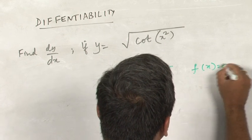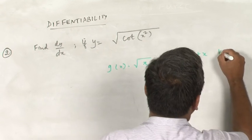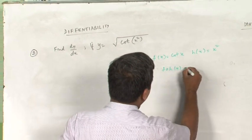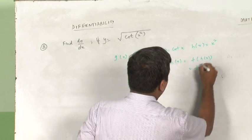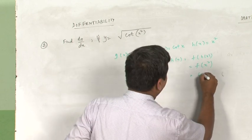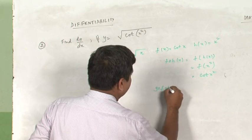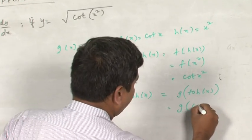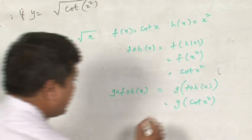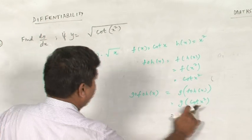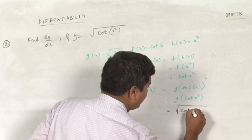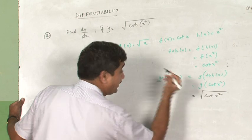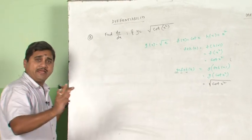The three functions are: g(x) = √x, f(x) = cot x, and h(x) = x². First, f∘h(x) = f(x²) = cot(x²). Then g∘f∘h(x) = g(cot(x²)) = √(cot(x²)). Since g(x) = √x, whatever is in the place of x goes under the radical sign, giving √(cot(x²)). When differentiating this function, you are differentiating three functions g, f, and h, so differentiation will occur three times.